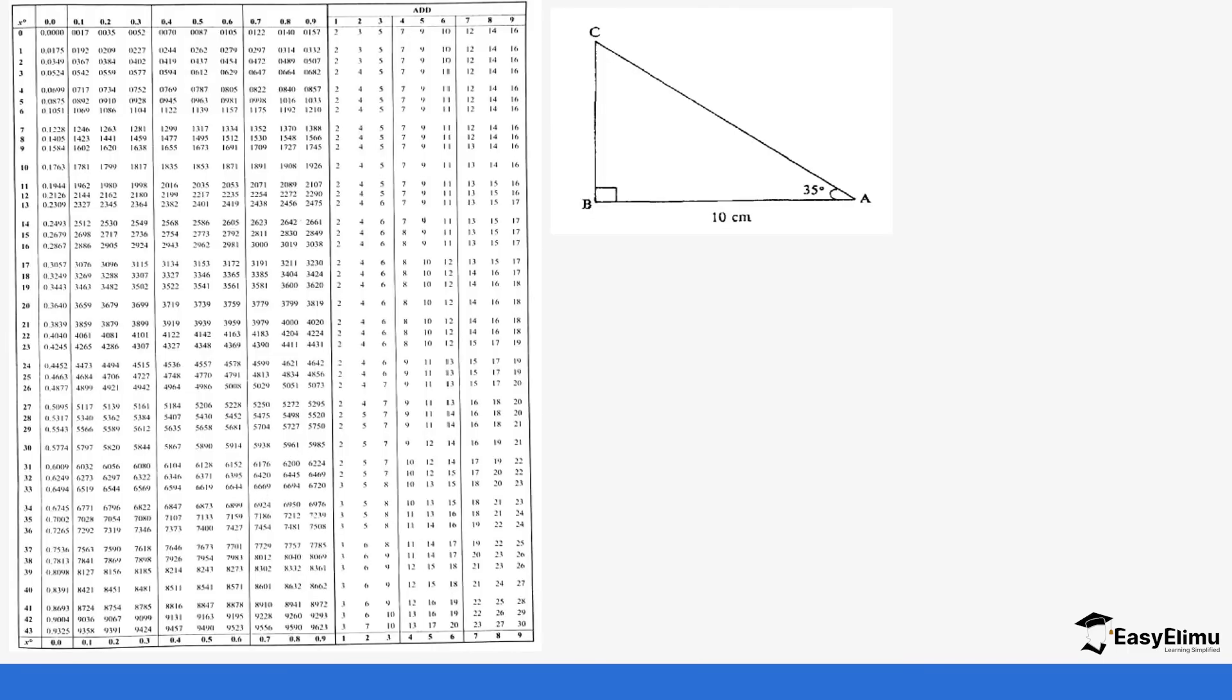First of all we will start with looking for the value of CB. Before we were able to get this value by Pythagoras theorem but you can see we do not have the important values. So what we use is a tangent. So we say that the tan of 35 degrees is equals to opposite which is CB over BA.